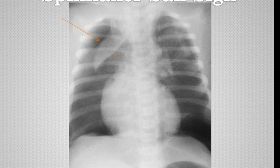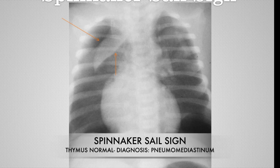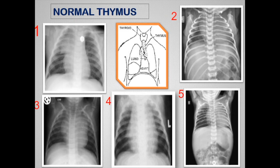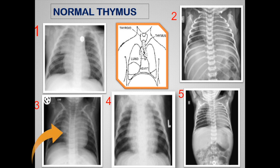When both lobes of the thymus are elevated upwards and laterally, we call this the spinnaker sail sign, and this is a sign of pneumomediastinum. There is a complete spectrum of normal thymic appearances on chest X-ray. Figure 1 shows a typical sail sign on the right. Figure 2 shows thymus on either side but dominantly on the left with obliteration of the left heart border. Figure 3 shows thymus on either side with a typical notch sign on the right. Figures 4 and 5 show additional thymic variants.